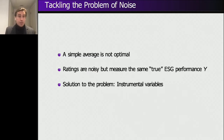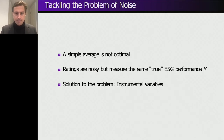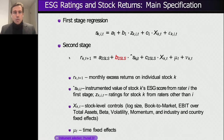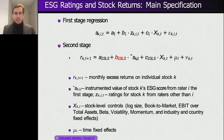There is ample literature, for example about GDP, on noise correction using this approach. We apply it to ESG ratings. The method works as a two-stage least squares — a first-stage regression and a second-stage regression. For those who don't follow the math, I'll explain it in words, so please just listen rather than focus on the slide.